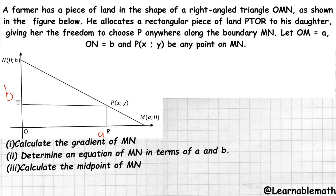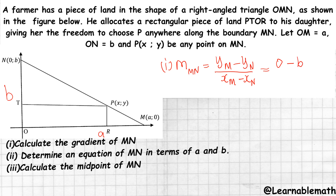The first question: calculate the gradient of MN. Using the gradient formula — y at M minus y at N, divided by x at M minus x at N — y at M is 0, y at N is b, x at M is a, x at N is 0. Simplifying, the gradient of MN is minus b divided by a.